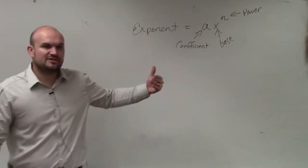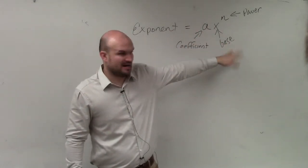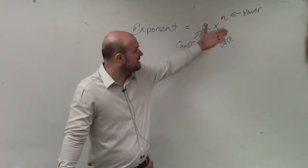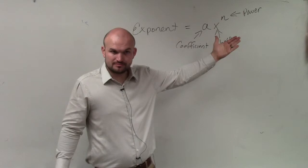So the coefficient is what you multiply your exponent by. Your exponent is contained by a base, and then what your base is raised to.